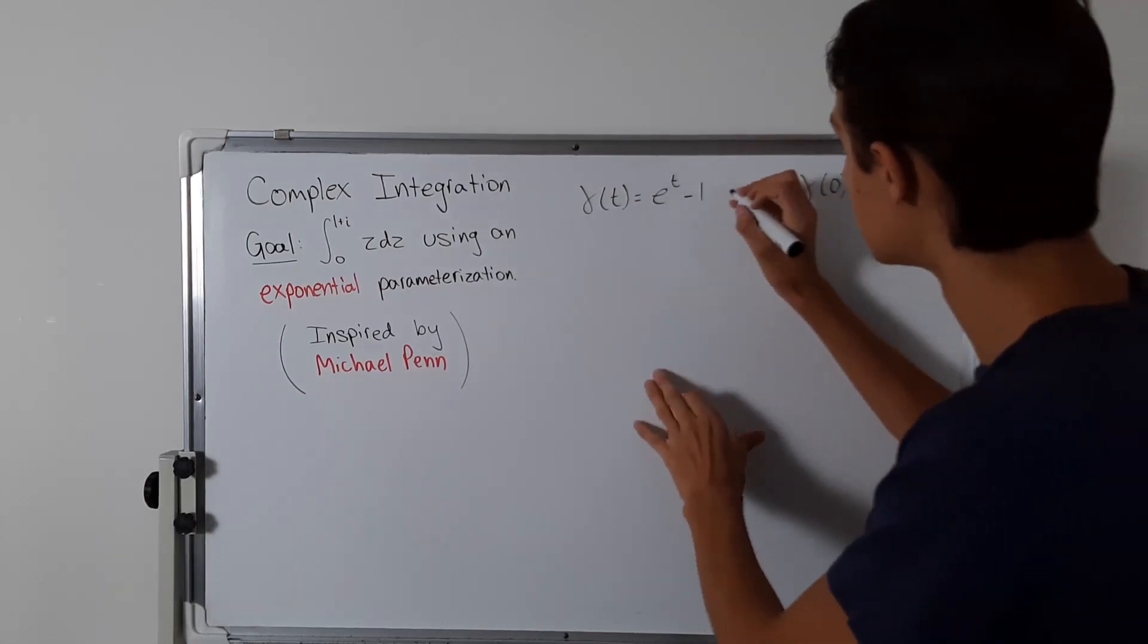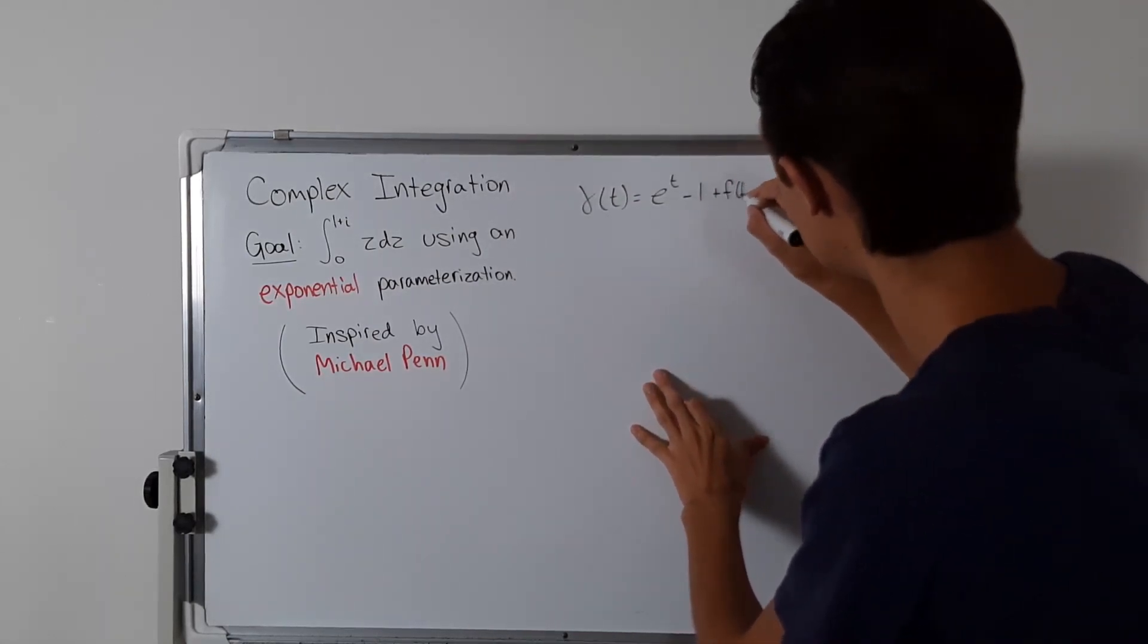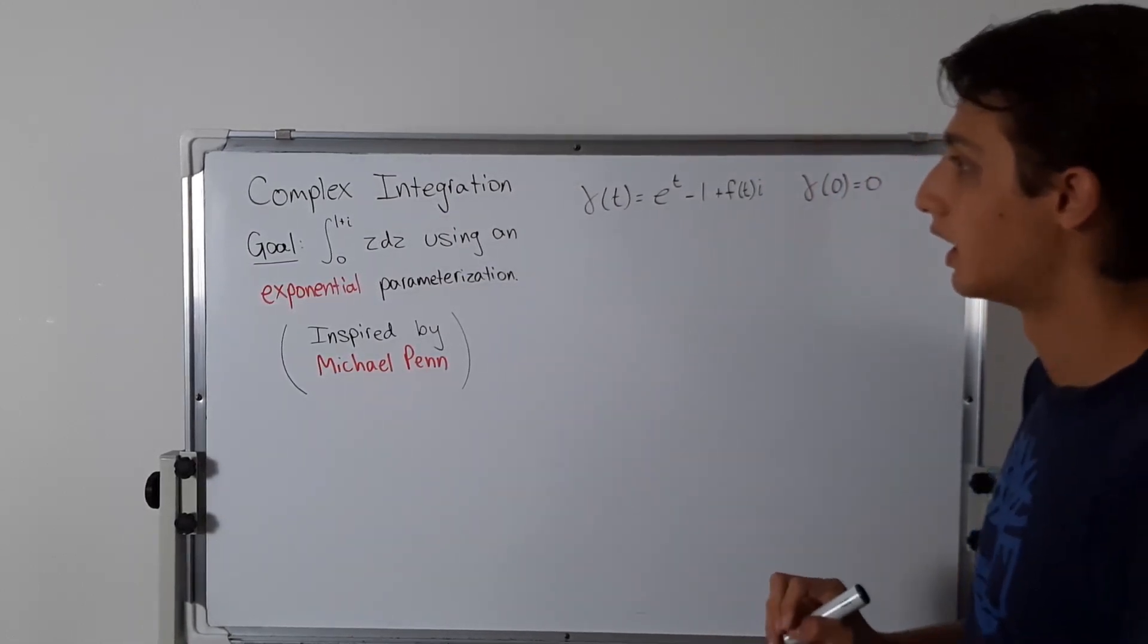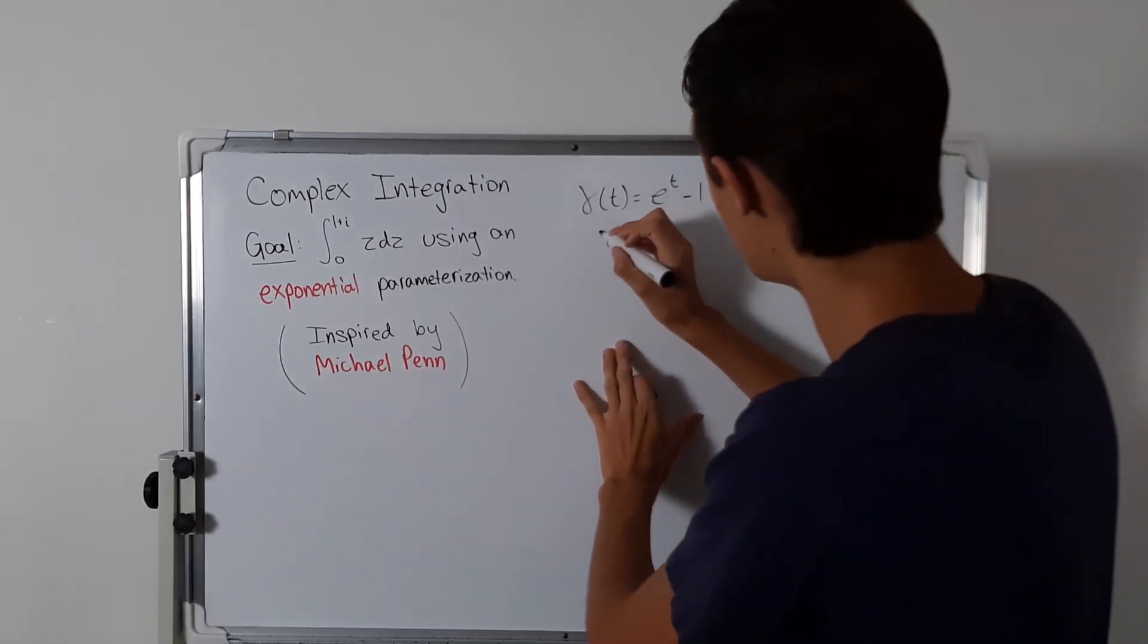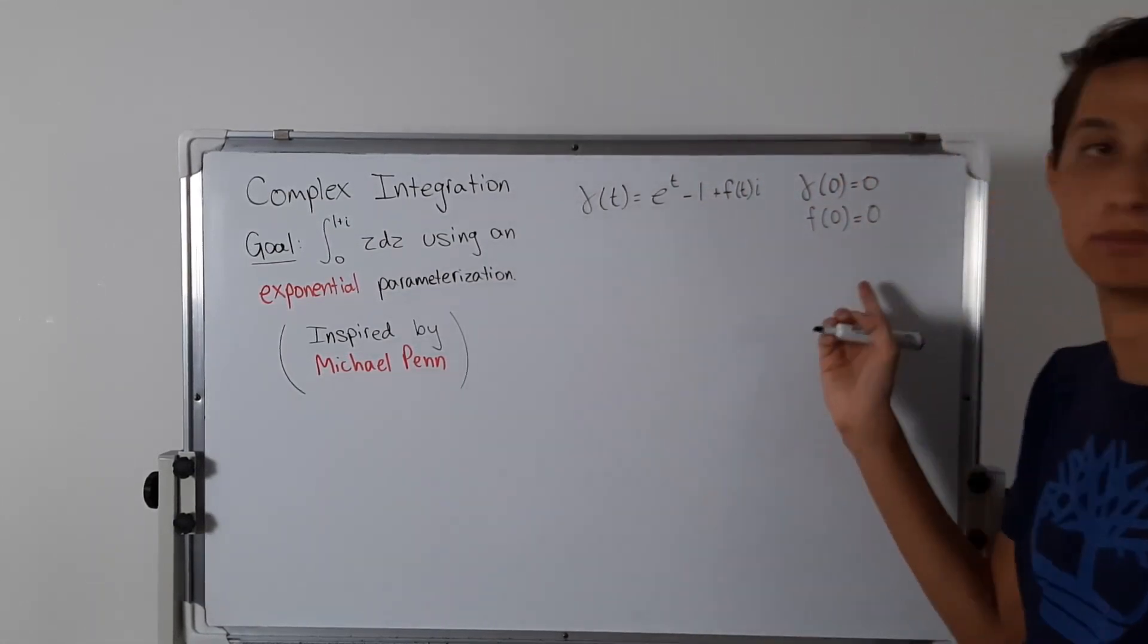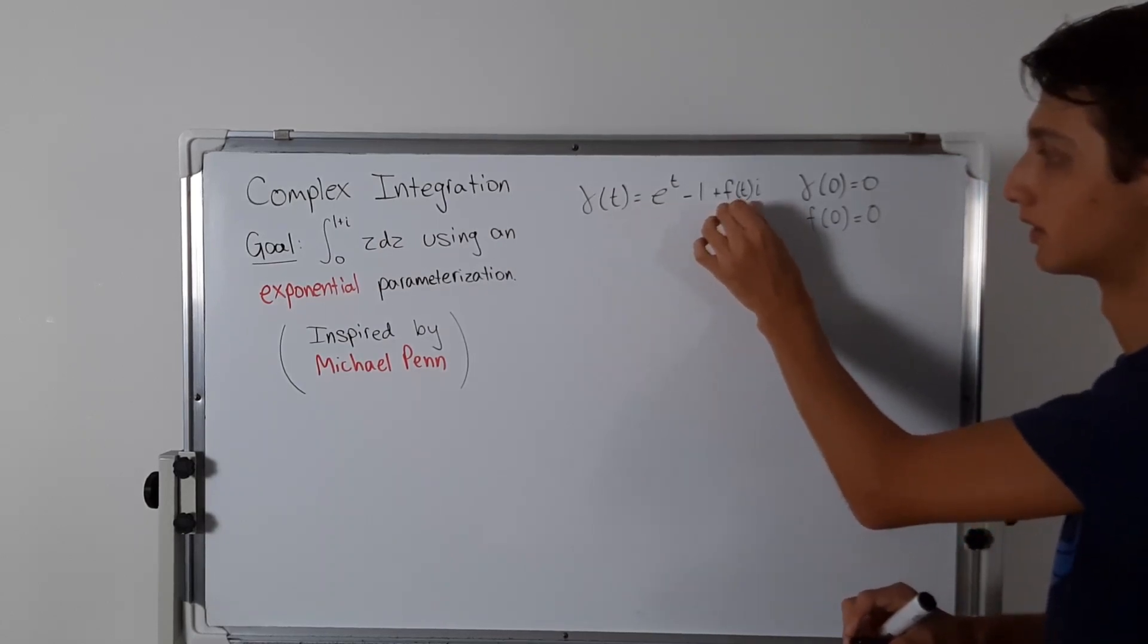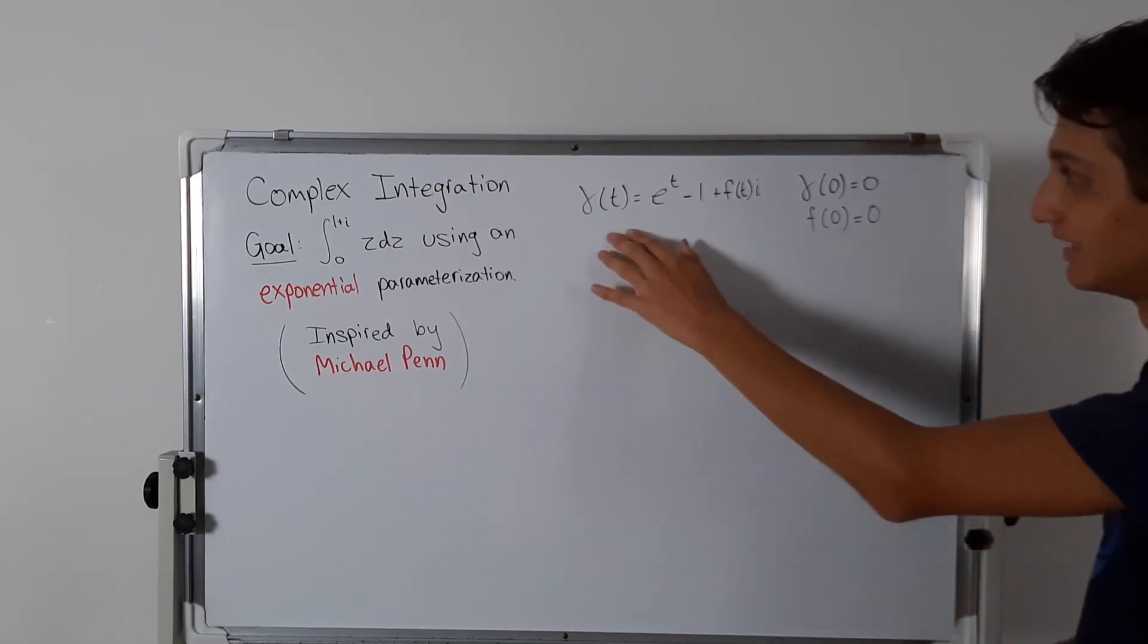Let's just think. We'll need some f of t times i. So this is what we'll need. And let's just figure it out. Since gamma of 0 equals 0, then we know that f of 0 must be equal to 0, because if this is 0 then this also has to be 0.